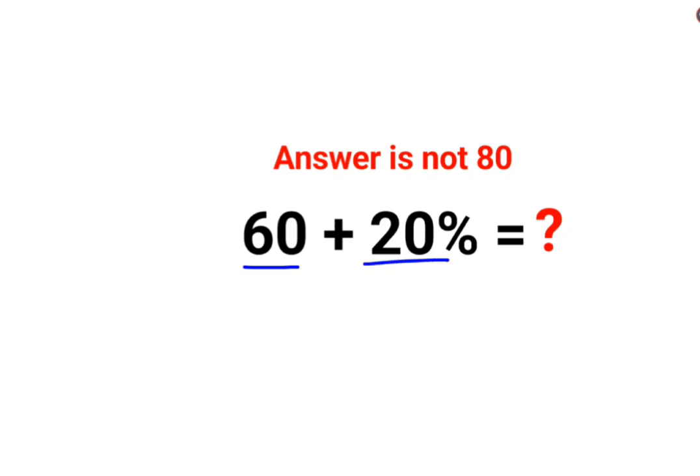Please understand - here we are trying to say that you have to increase 60 by 20%, so 20% of 60 itself.